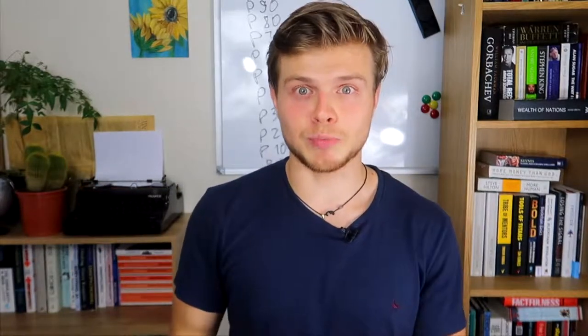So we divide P90 by P10 and we get a number. This is one of the measures of inequality, and this is the one that is used in this book.